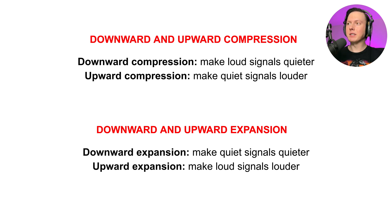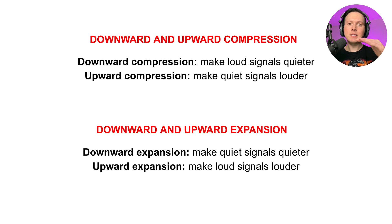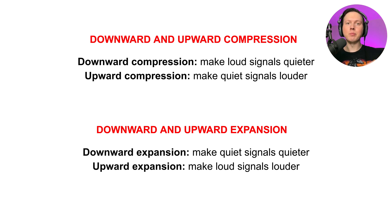Upward compression is actually going to make quiet signals louder. So anytime a signal falls below a threshold, that signal is brought up and you are therefore creating a smaller dynamic range.